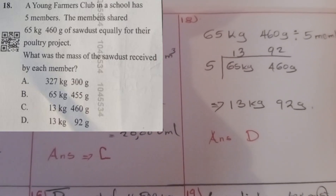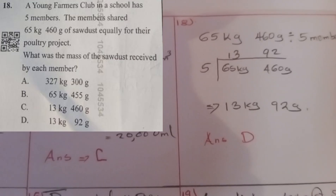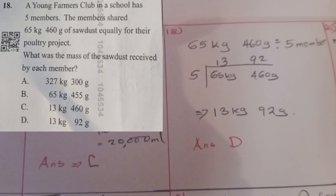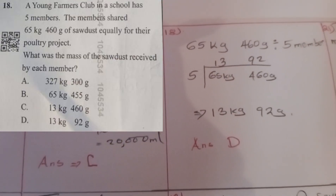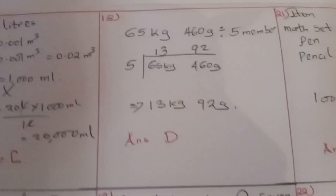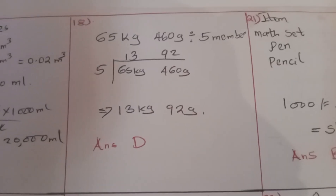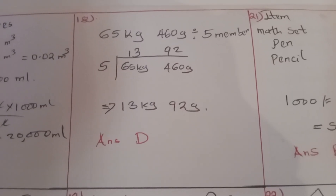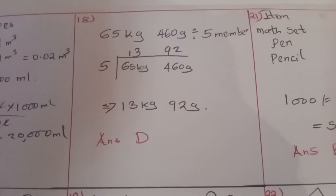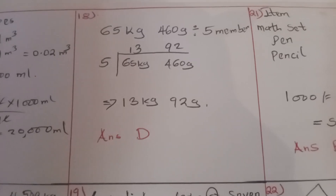Question eighteen: a young farmers club in school has 5 members. They shared 65 kg 460 grams of sawdust equally for their poultry project. What was the mass of sawdust received by each member? We divide: 65 kg divided by 5 equals 13 kg, and 460 grams divided by 5 equals 92 grams. So each member got 13 kilograms 92 grams. The answer was D.